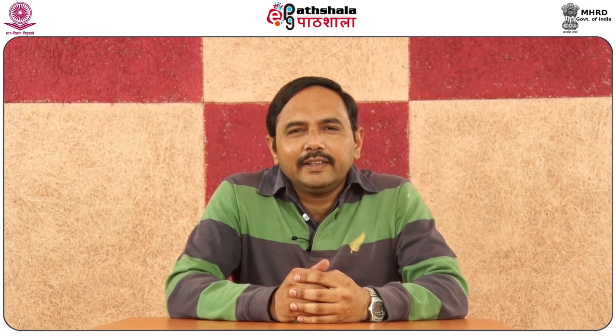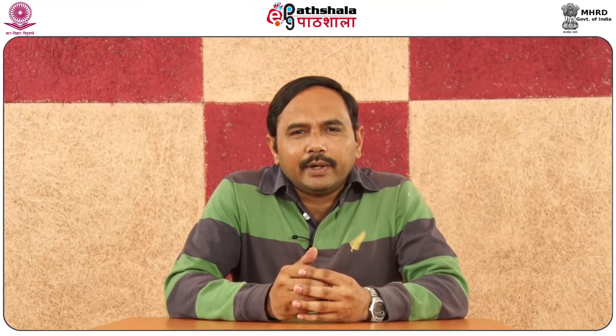We noted that φ(n) < n whenever n > 1, so for any positive integer n there exists k such that φ^k(n) = 1. We also observed that σ(n)·φ(n)/n² is a bounded function lying in (1/2, 1]. We saw various other properties of the Euler-Phi function. It is interesting to look at alternative proofs; for example, in Elementary Number Theory by Burton, one can find an alternative proof that φ is multiplicative, which gives a different intuition. With this, we end this module.